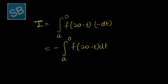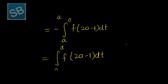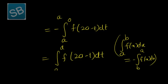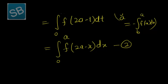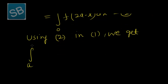As we know, on changing the variable there is no difference in the integration, and on changing the limits the negative sign is eliminated. So using the rule that the integral from a to b of f(x) dx equals minus the integral from b to a, we get I equals the integral from 0 to a of f(2a minus t) dt, which is the same as the integral from 0 to a of f(2a minus x) dx.